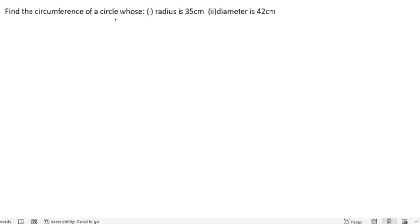Find the circumference of a circle whose radius is 35 centimeters and diameter is 42 centimeters. This is the second bit. So let us start the solution. What they are asking is to find out the circumference.